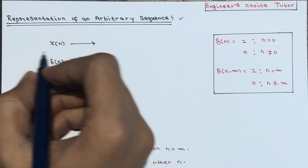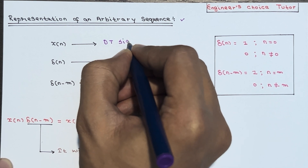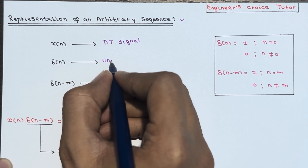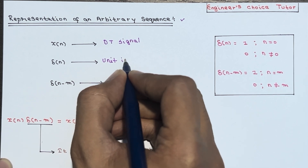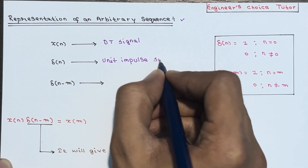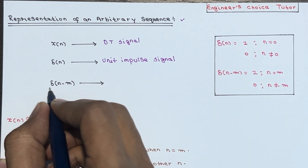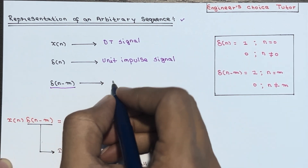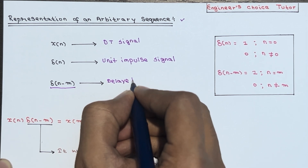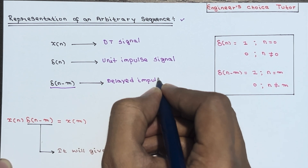Let x(n) be a discrete time signal. δ(n) is the unit impulse signal. And δ(n-m) is the delayed impulse signal.